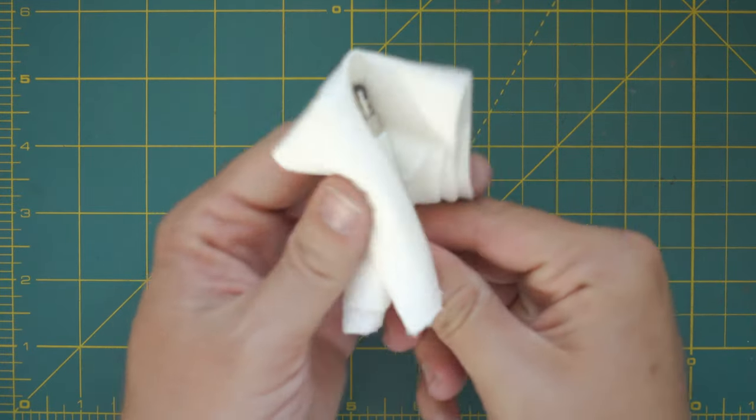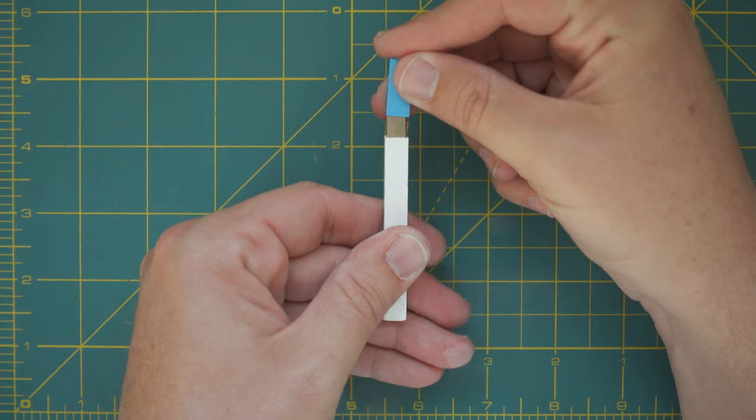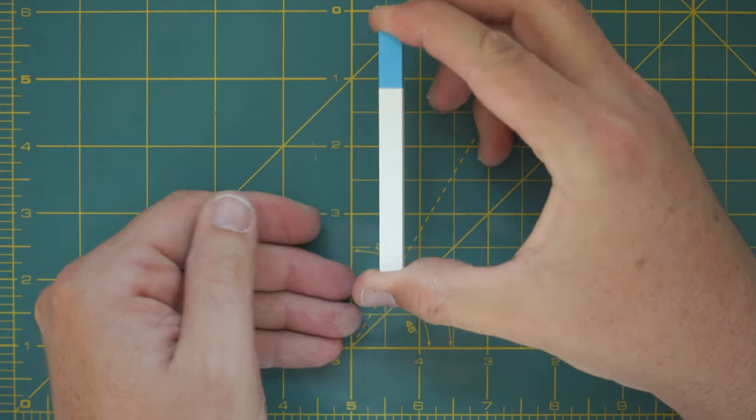I wiped away any excess lighter fluid and then was able to put the cap back on. It's a really neat little item.